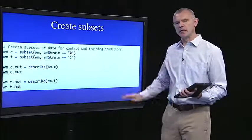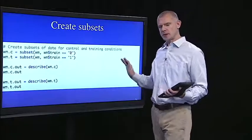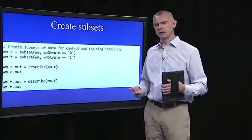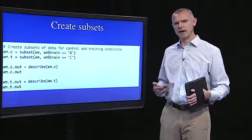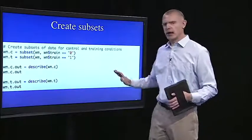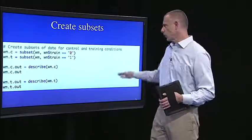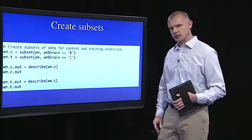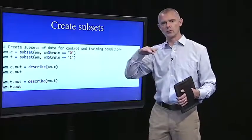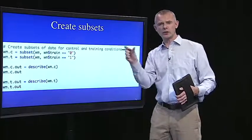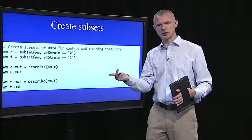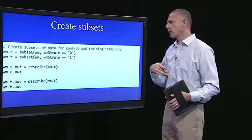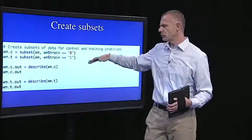So one thing I'm going to do at the outset of this script is create some subsets of data. Because remember, we're approaching the data in a couple of different ways to do different kinds of analyses. So just to make our lives easier, I'm going to subset the data. One way I'm going to subset it is by control and training conditions. Because in the next segment, we're going to do a one-way ANOVA where we just want to look within the subjects who had training.